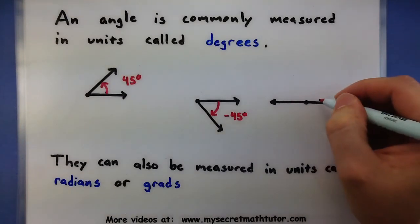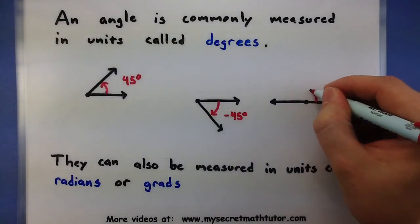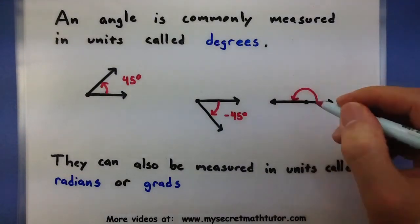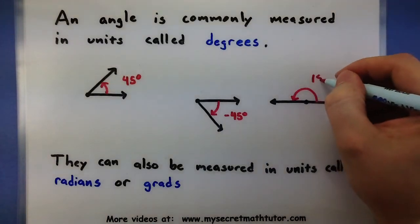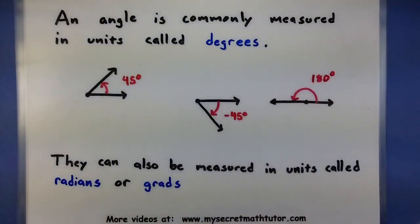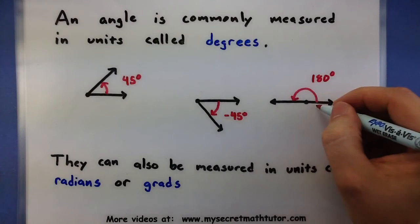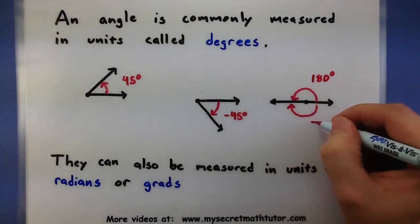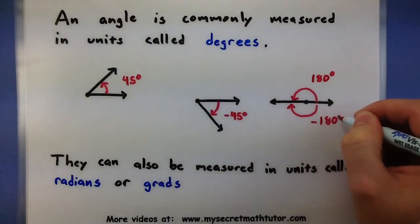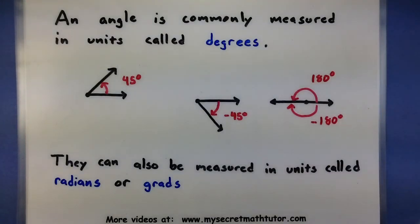You'll find that there are a few instances where angles will actually be in the same spot. So maybe I'm going in this direction, 180 degrees. Or I could have gotten to that same place by going the other direction, negative 180 degrees. Now these angles can also be measured in units called radians or grads, and I'll talk about these in future videos.